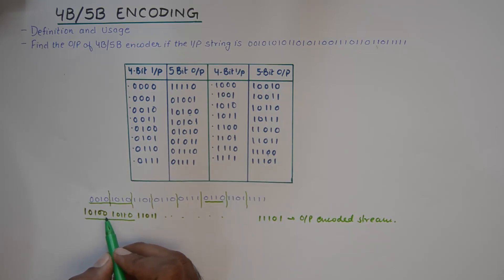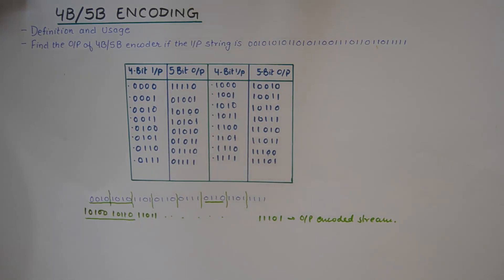So we can have a continuity of three zeros at the most in the output which is pretty manageable, so timing extraction becomes easier. That's the reason 4b5b encoding scheme was invented and I hope this quick tutorial on 4b5b encoding was of help.